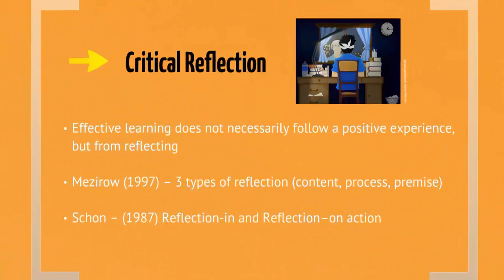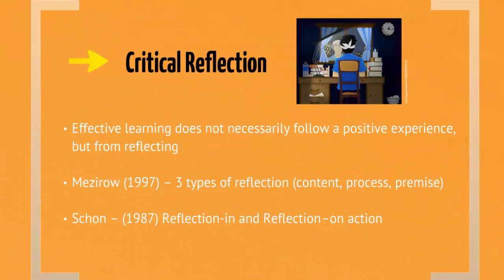Another key concept in transformative learning is the power of critical reflection. This means we have an objective lens through which we're looking at our learning. Effective learning does not necessarily follow a positive experience, but if we reflect on that experience, then we can take the learning out of it. Mesro refers to three types of reflection: on the content, the process, and the premise. Schoen, who talks a lot about reflection in professional development, refers to two terms: reflection in action and reflection on action — reflecting while the action is happening, versus sitting down later to look back and take the learning out of the experience.